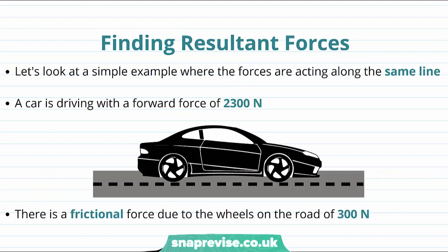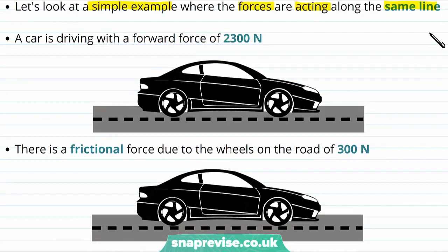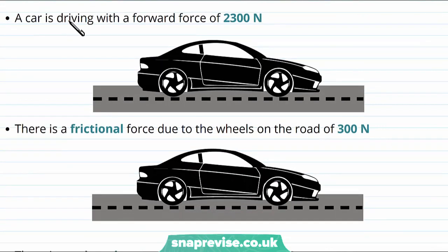Let's try and calculate a resultant force now. We'll look at a simple example where all of the forces acting on the object are along the same line, but of course they might be in opposite directions. So imagine a car is driving forwards with a force of 2300 newtons.